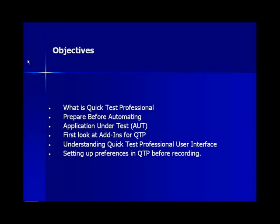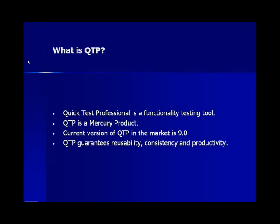So now let us start the class by getting to know what exactly is Quick Test Professional. QTP is basically a functionality testing tool. This is the most commonly used tool for functional testing. Quick Test Professional is a product of Mercury Interactive, and the current version of QTP in the market is 9.0.